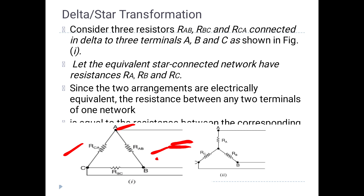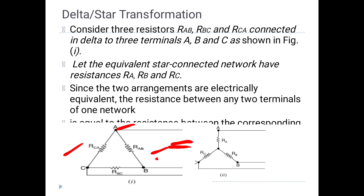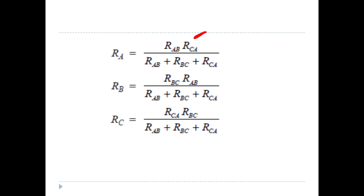Now the derivations: given RAB, RBC, and RCA are known, we can find RA, RB, and RC. Using the equivalence condition, RA equals RAB multiplied by RCA, divided by the sum of RAB, RBC, and RCA. This is our numerator divided by the sum Rab, RbC, and Rca.